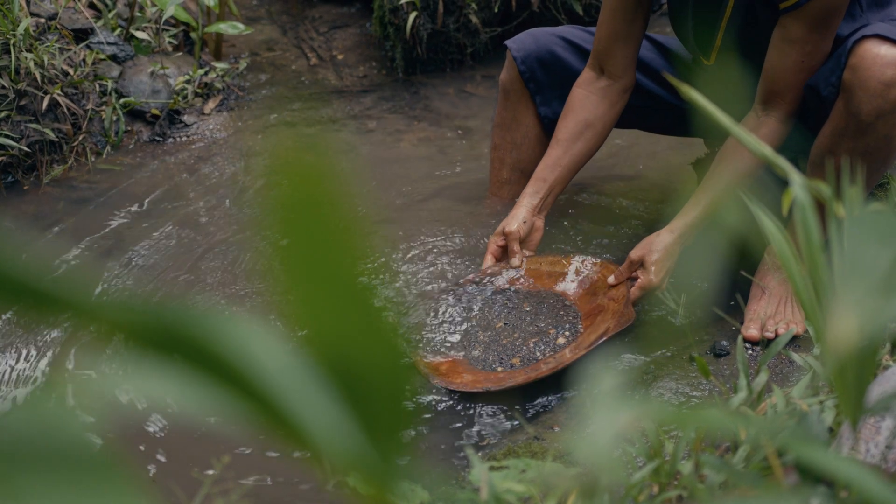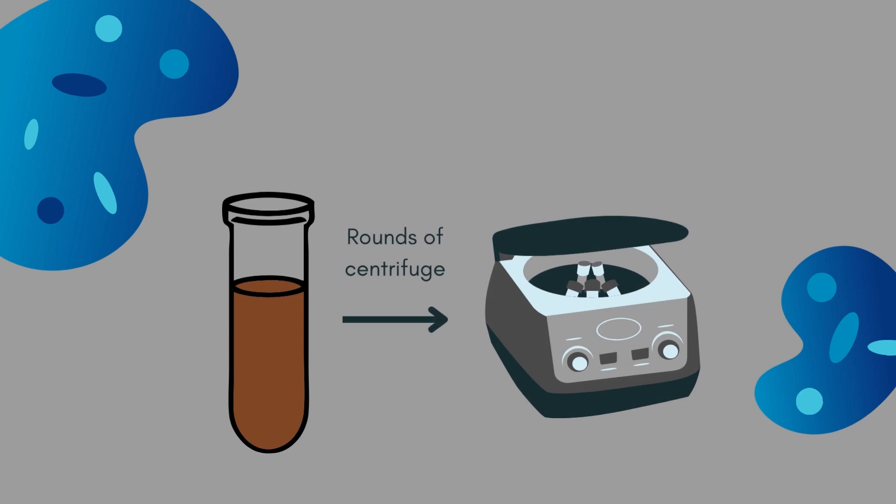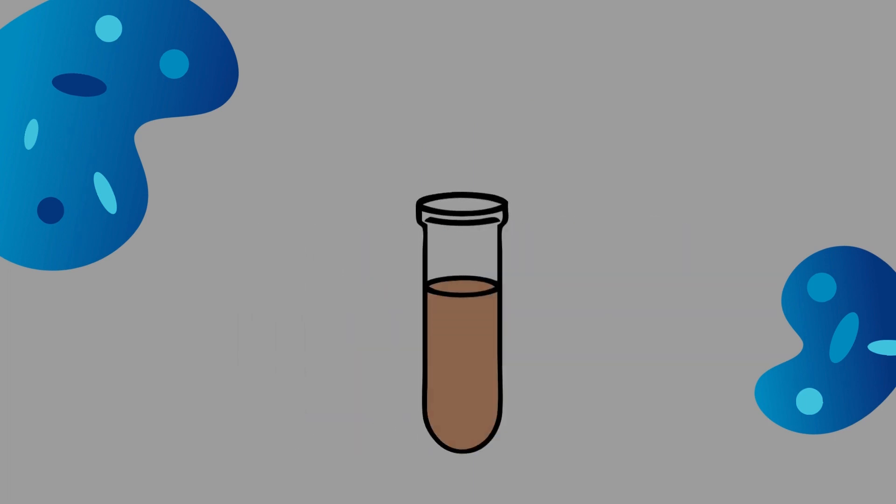The next step was like sifting for gold. Through purification processes, the best particles with the most desirable properties were selected and harvested. And indeed, the result was akin to striking gold, a bounty of nanoparticles that not only had a consistent size and shape but also had special surface properties that made them extremely efficient at interacting with light.